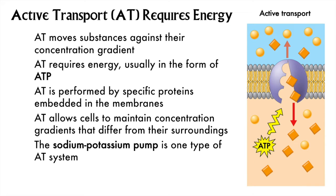Active transport is what we call transport against a concentration gradient and it requires energy. The energy source for moving molecules against their concentration gradient is usually ATP, or adenosine triphosphate. Certain transport proteins embedded in the bilayer can use ATP energy to maintain a concentration gradient.